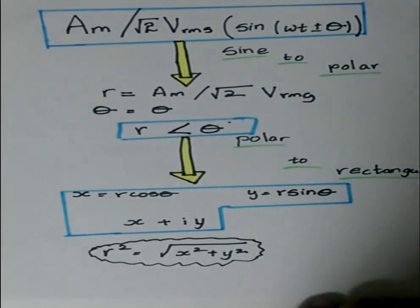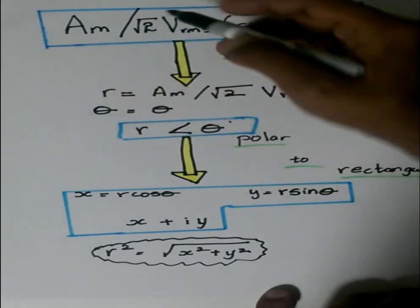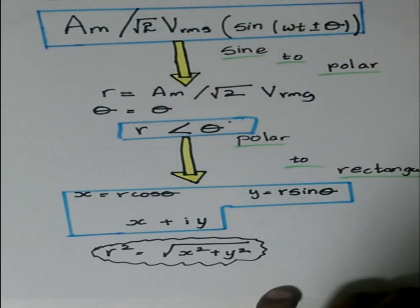So after we derive it, we could just write it in terms of x and y. Just to give you a brief of what we've learned today, the amplitude or the root of voltage, the root mean square of voltage, times sine(ωt + θ)...